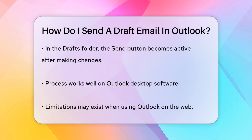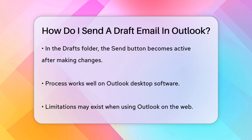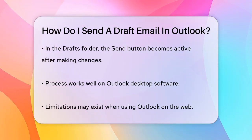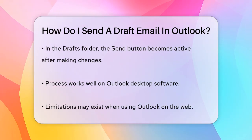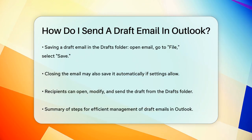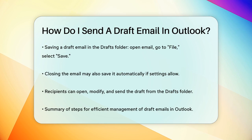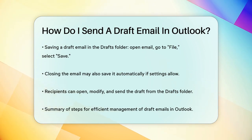To save a draft email in your Drafts folder, simply open the email, go to the File tab, and select Save. This will save the email in your Drafts folder. Alternatively, you can close the email, and if your Outlook settings are set to save unsent emails, it will automatically be saved in the Drafts folder.